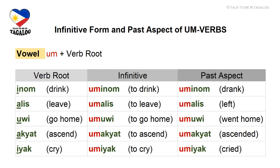Let's apply the rules to examples with vowel-starting roots. Our first verb root is inum, meaning drink. Inum starts with an I, so to form the infinitive, add UM before: uminom, meaning to drink. The past aspect is the same: uminom, meaning drank.